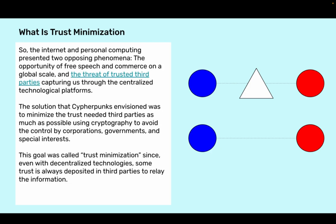What is trust minimization? The internet and personal computing presented two opposing phenomena: the opportunity of free speech and commerce on a global scale, and the threat of trusted third parties capturing us through centralized technological platforms. The solution that cypherpunks envisioned was to minimize the trust needed in third parties as much as possible using cryptography, to avoid control by corporations, governments, and special interests. This goal was called trust minimization, since even with decentralized technologies some trust is always deposited in third parties to relay the information.